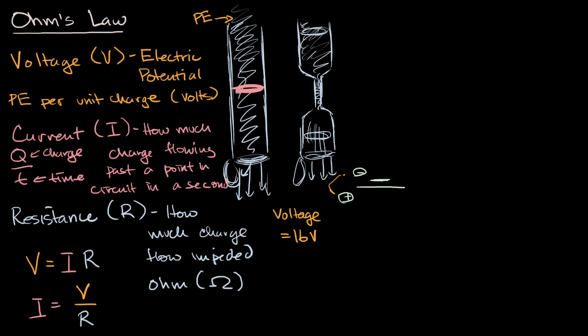And so one way to think about it is, the potential energy per unit charge, let's say we have electrons here at the negative terminal, the potential energy per coulomb here is 16 volts. These electrons, if they have a path, would go to the positive terminal. And so we can provide a path.